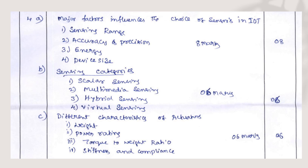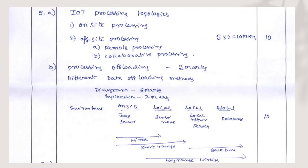Moving into the third module scheme: the first question was IoT processing topology — you have offloading processing, on-site processing, off-site processing, with subtopics under off-site processing being remote processing and collaborative processing. All these carry totally 10 marks. The B question was process offloading — the definition is 2 marks, and listing the different offloading methods available carries 8 marks, so totally 10 marks.